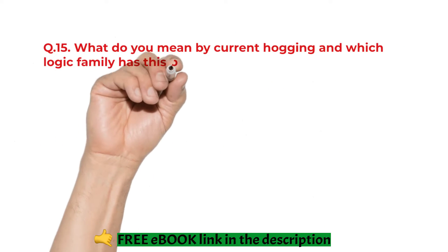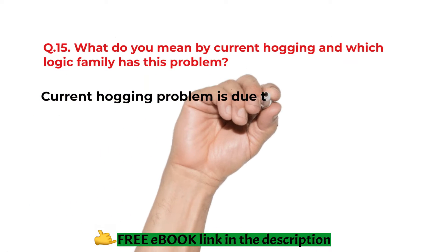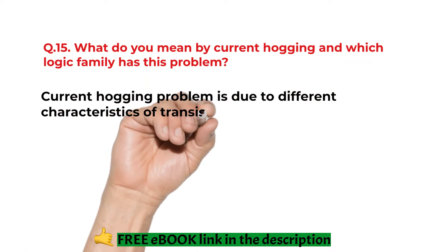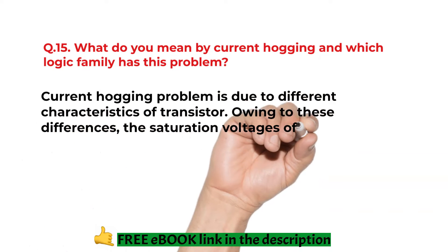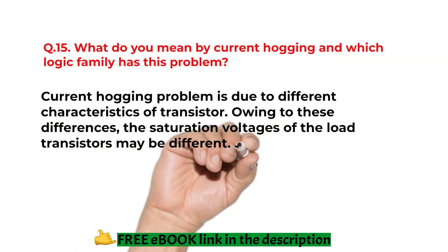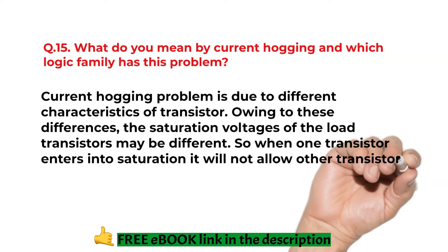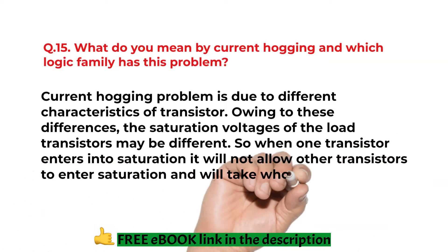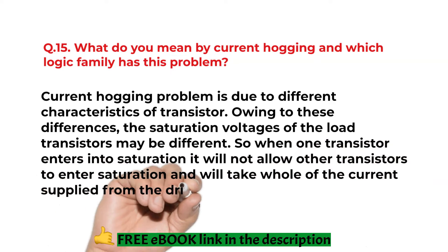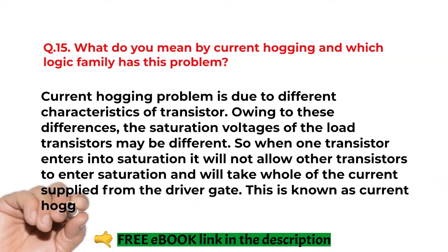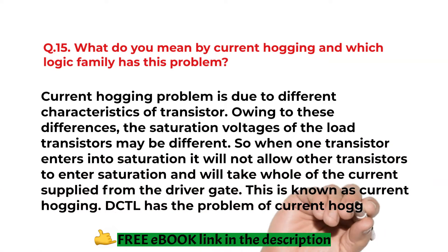What do you mean by current hogging and which logic family has this problem? Current hogging problem is due to the different characteristics of transistor. Owing to this differences the saturation voltages of the load transistors may be different. So when one transistor enters into the saturation it will not allow other transistors to enter saturation and will take whole of the current supplied from the driver gate and this is with the DCTL.